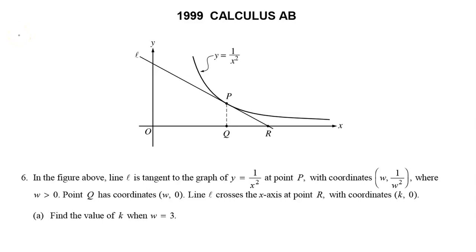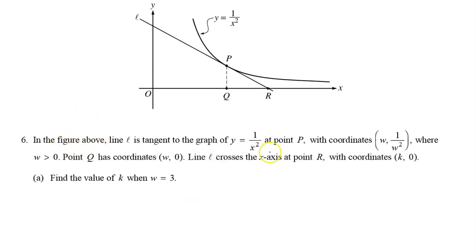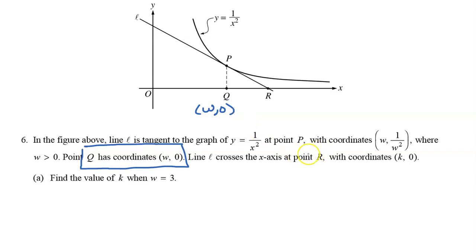In this video, we will go over problem number 6 from the 1999 AP Calculus exam. The setup mostly just describes what we see in the picture, except we are also told that point Q has coordinates w comma 0, and point R has coordinates k comma 0.